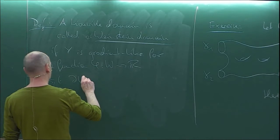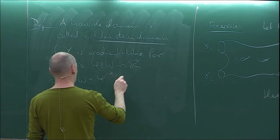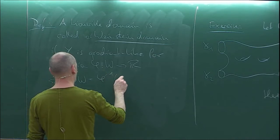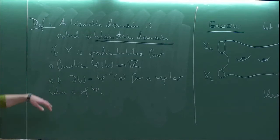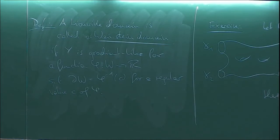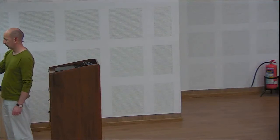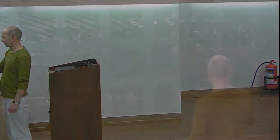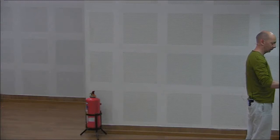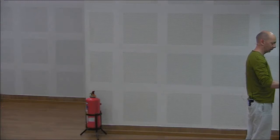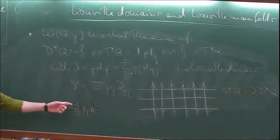Let's assume the boundary of W is a regular level set of phi. Once I have one such function I can always change it to make this true. On the ball, I could just take phi(x,y) to be the norm of x squared plus the norm of y squared — it's just the squared norm of my point in R^{2n}. And for the cotangent bundle example, my phi would be the norm of p squared.